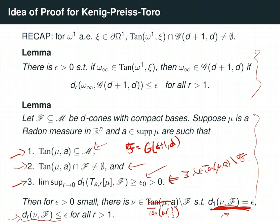Therefore, all tangent measures at the point C of harmonic measure omega_1 for the NTA domain are flat. This holds at omega_1-almost every C in the boundary, thus concluding the proof of the Kenig-Preiss-Toro theorem.